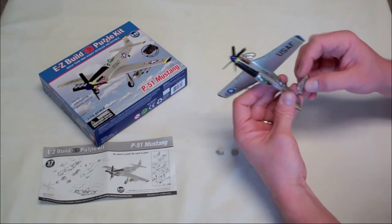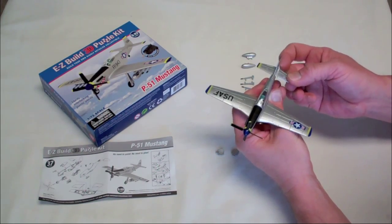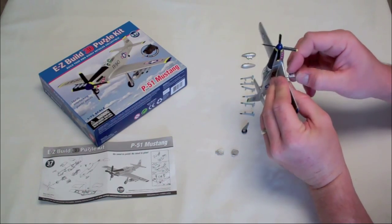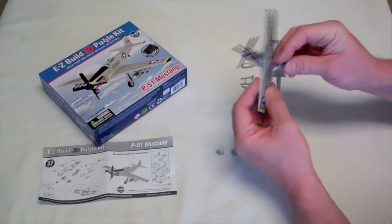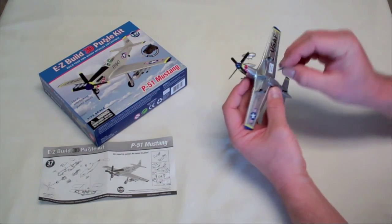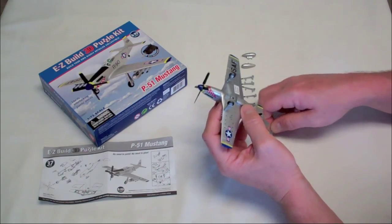The famous Chuck Yeager flew a P51D called Glamorous Glenn III. During the war, P51 Mustangs provided high-altitude escorts to bombers in nearly every combat zone, and by war's end, had destroyed more enemy aircraft than any other fighter in Europe. The P51 was also a natural for aerial photography, given its range and speed.